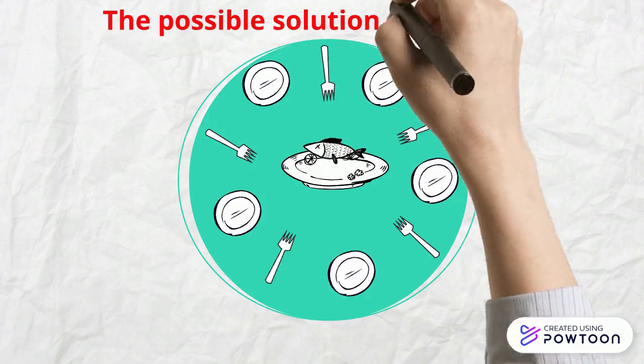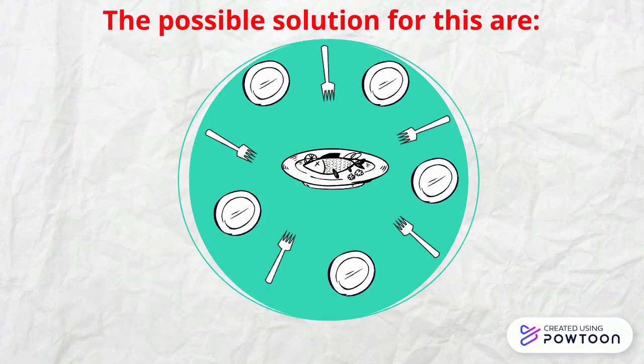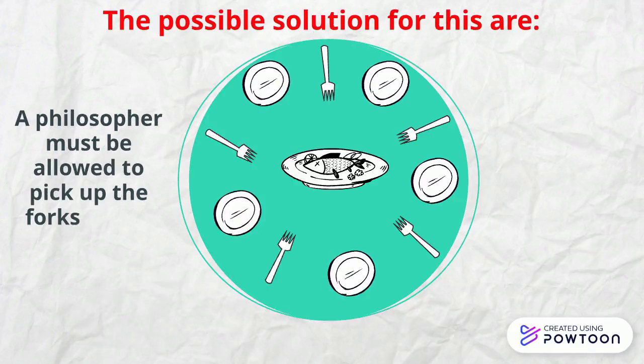The possible solutions for this are: A philosopher must be allowed to pick up the forks only if both the left and right forks are available.